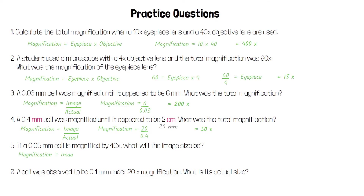We use the same equation for the next question. We know that the magnification is 40 times and the actual size is 0.05 millimetres. If we multiply both sides by 0.05, that means 40 times 0.05 is equal to the image size. 40 times 0.05 is 2 millimetres, so that is how big the object would appear.